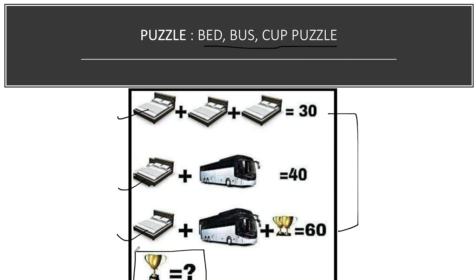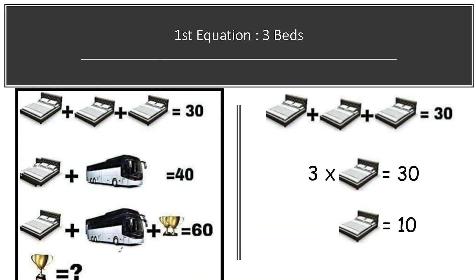Three, two, one, stop. Hope you all enjoyed solving this puzzle and got the right answer. Let's jump to the solution and solve the first equation. In the first equation you can see there are three beds present and their total value is equal to 30.